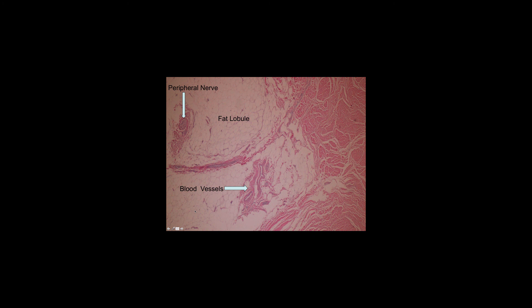The final slide in this review is a section from the intraarticular fat pad. Note the lobules of mature adipose tissue associated with groups of blood vessels, collections of small peripheral nerves, and dense bundles of subsynovial connective tissue on the right.